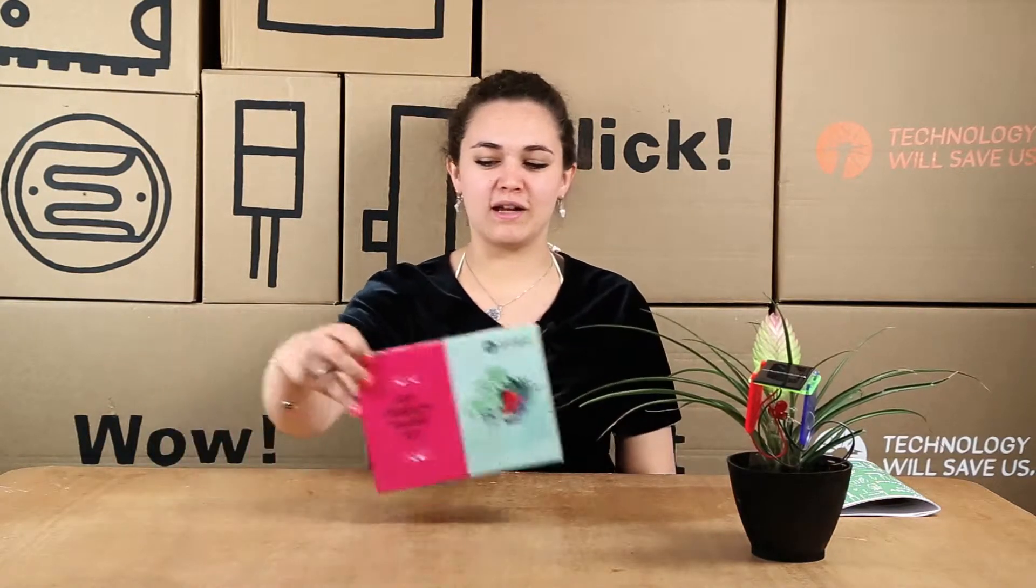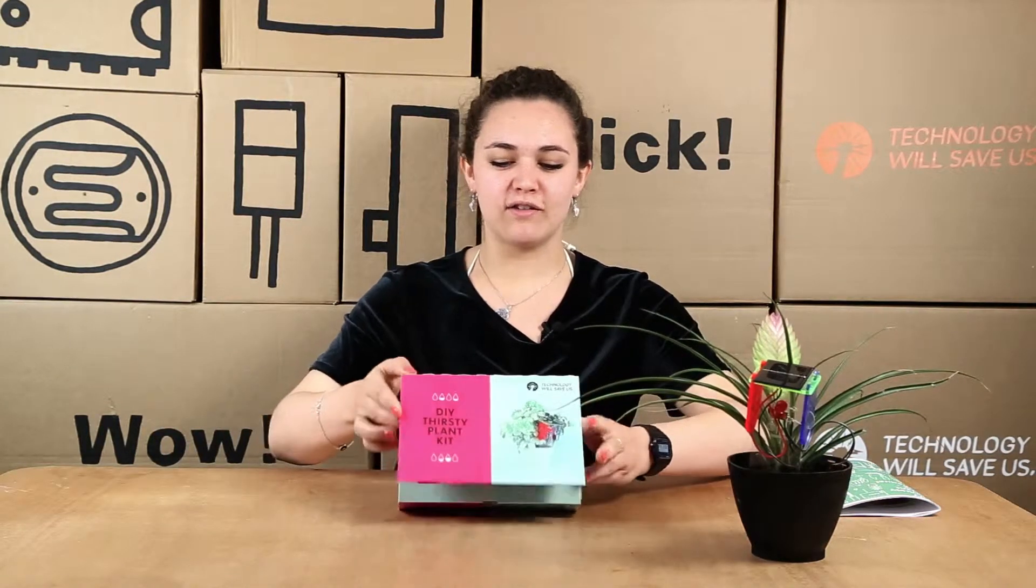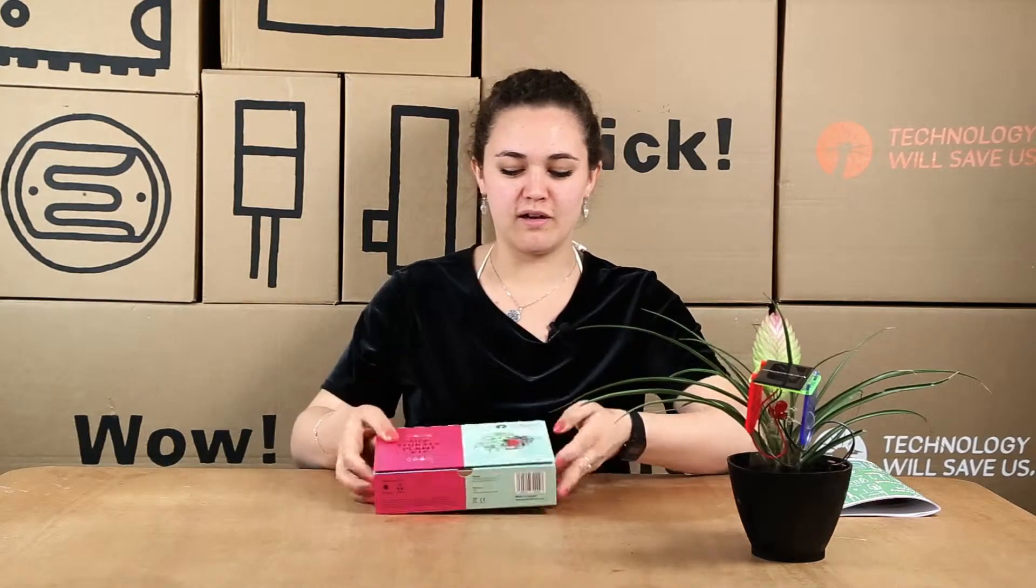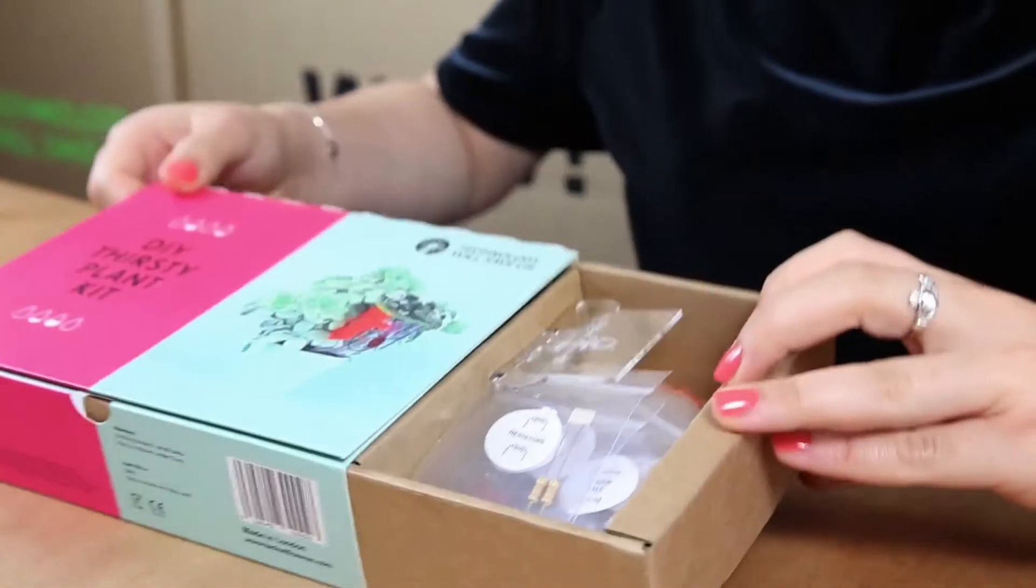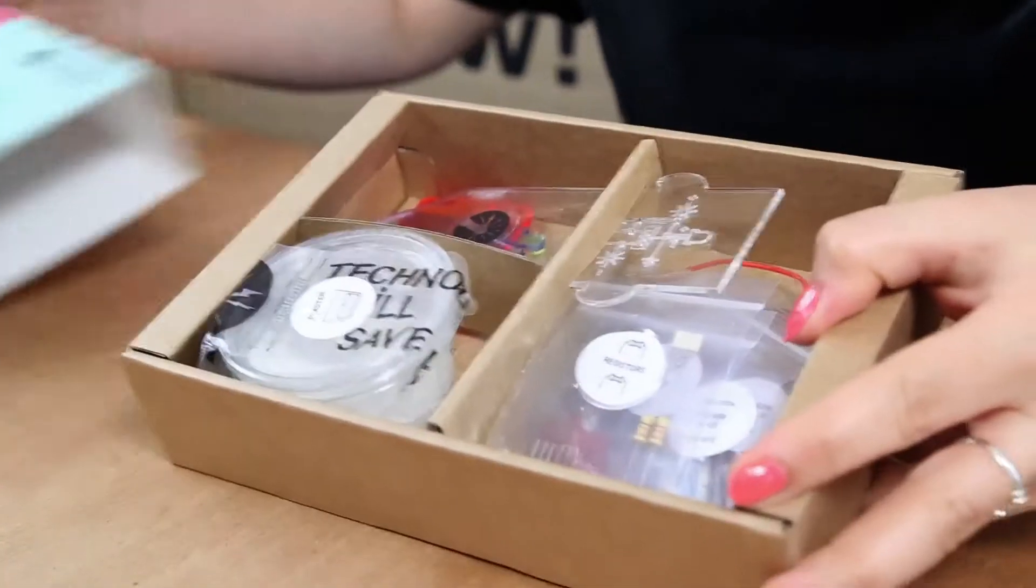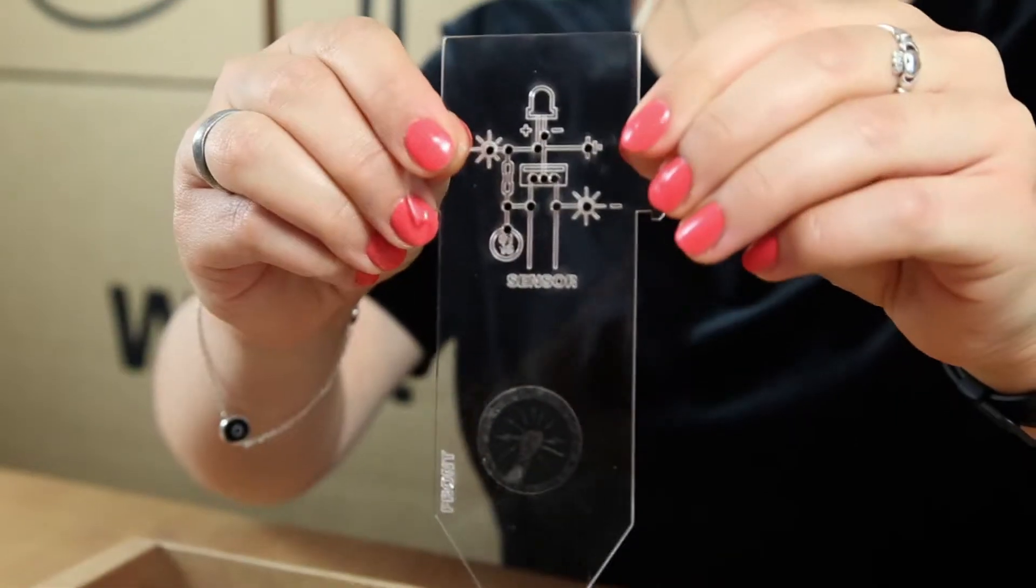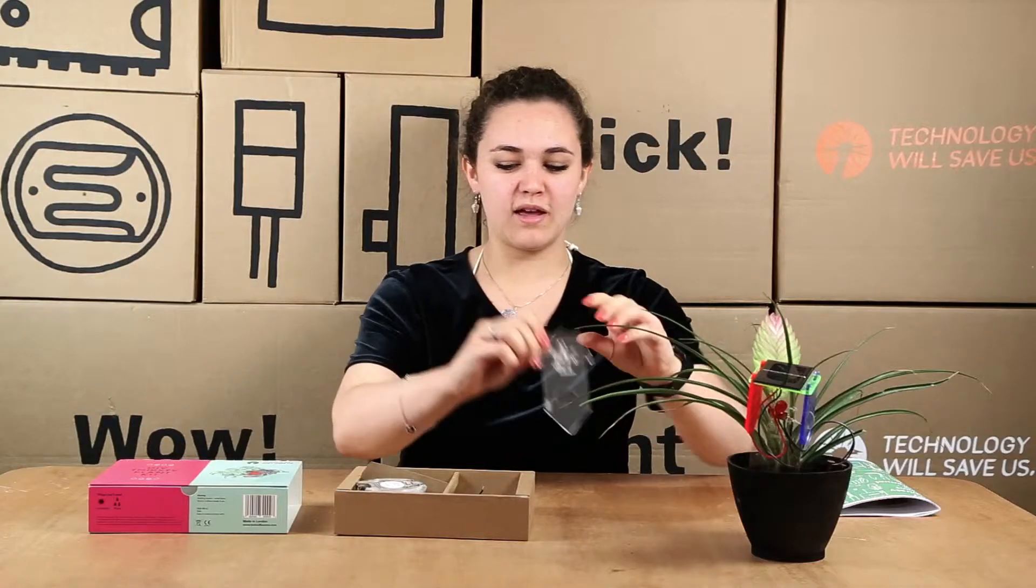So when you get your DIY Thirsty Plant kit, you get it like this. You have nice pieces of information inside and on the back and if we open it up, you have your acrylic marker. So this is where you put all your circuitry into. It has a nice little diagram there.